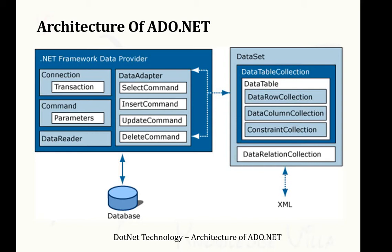The DataSet is a disconnected object and is a combination of DataTable and DataRelation. A DataTable also contains rows, columns, and constraints. This is the architecture of ADO.NET, with which we can perform any database operation — INSERT, UPDATE, DELETE, and many other data manipulation operations — and connect your application to the database.